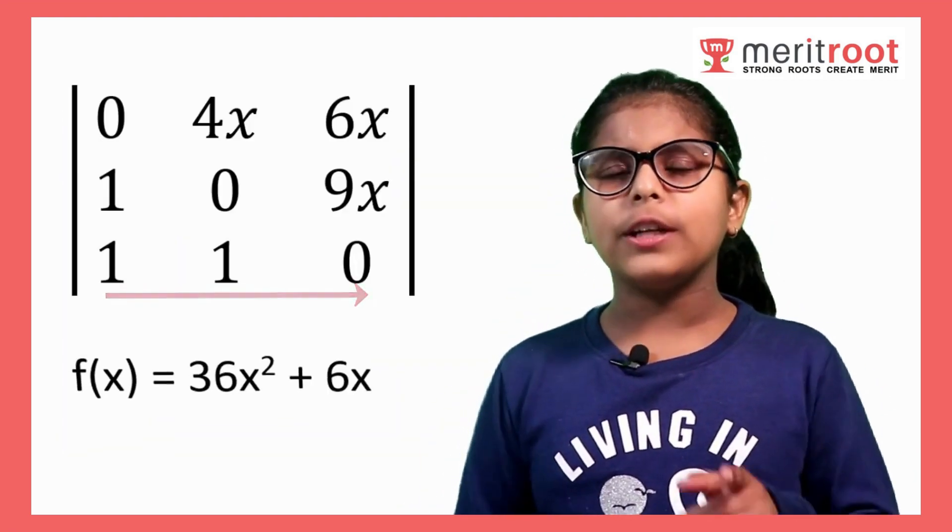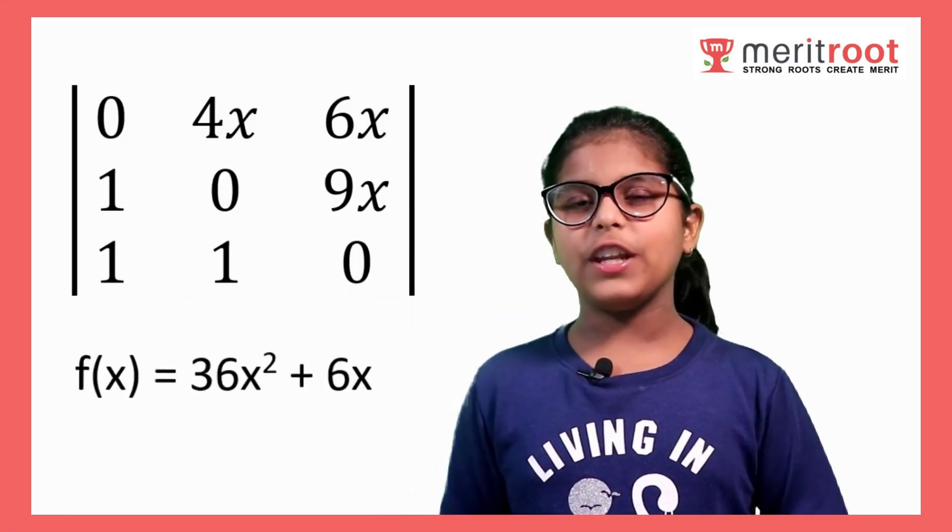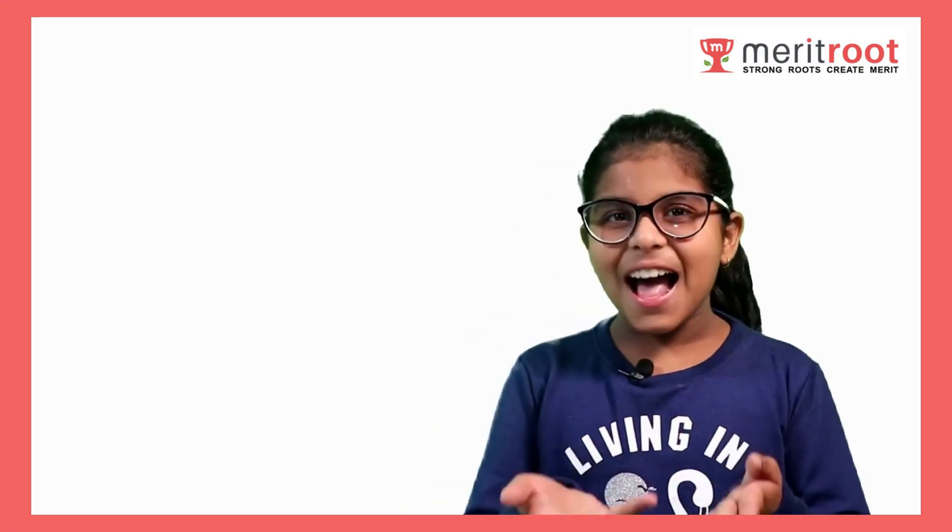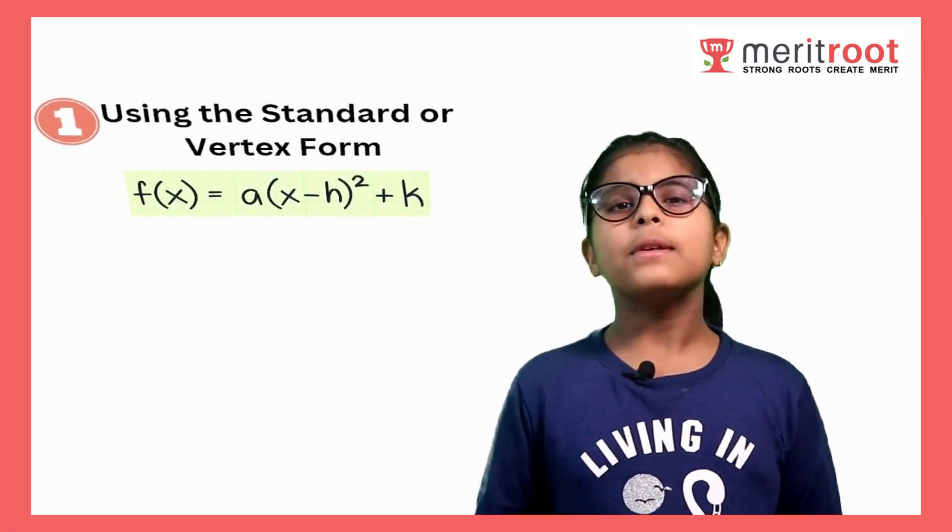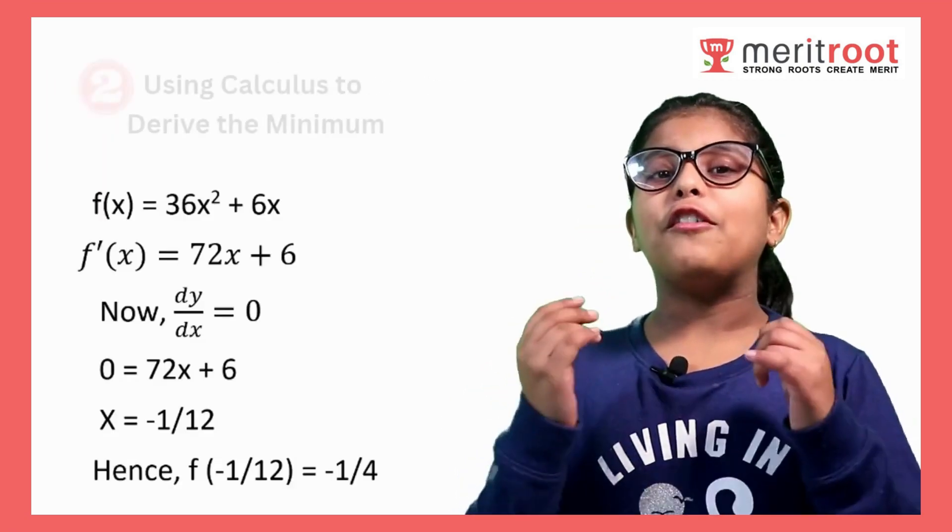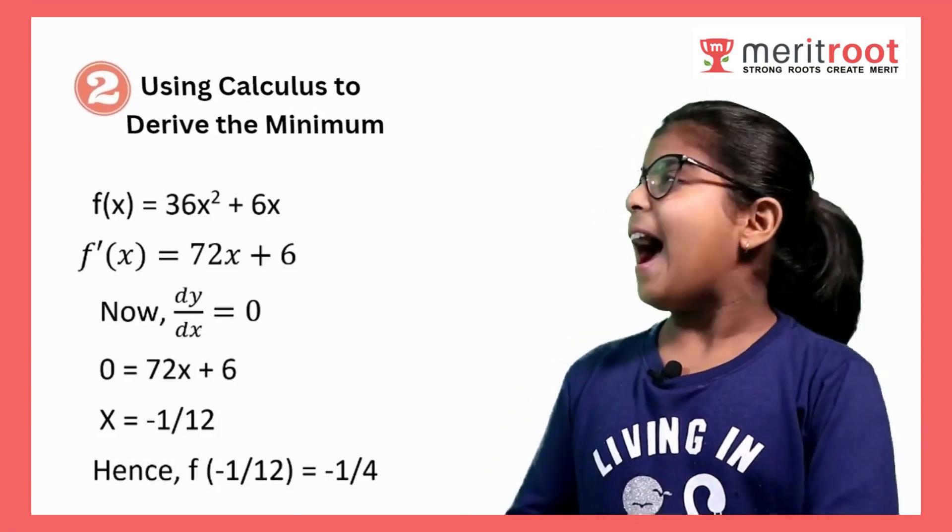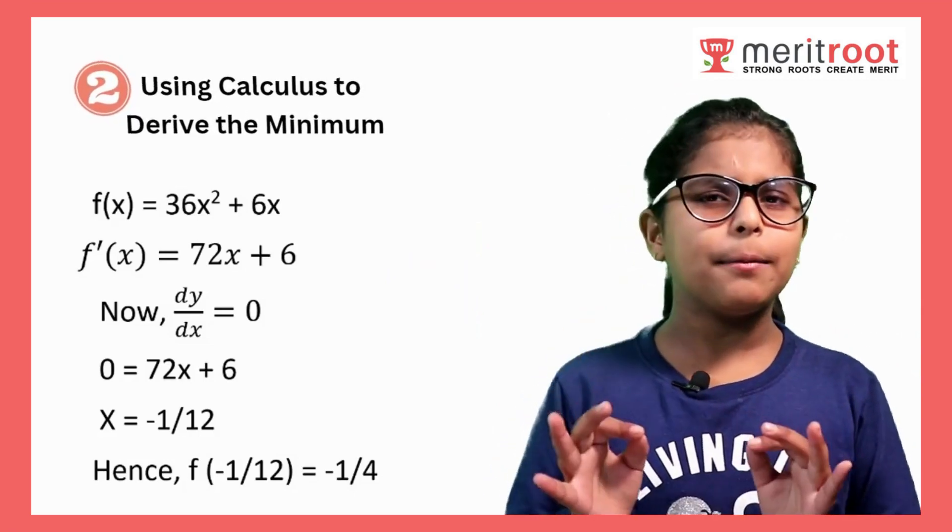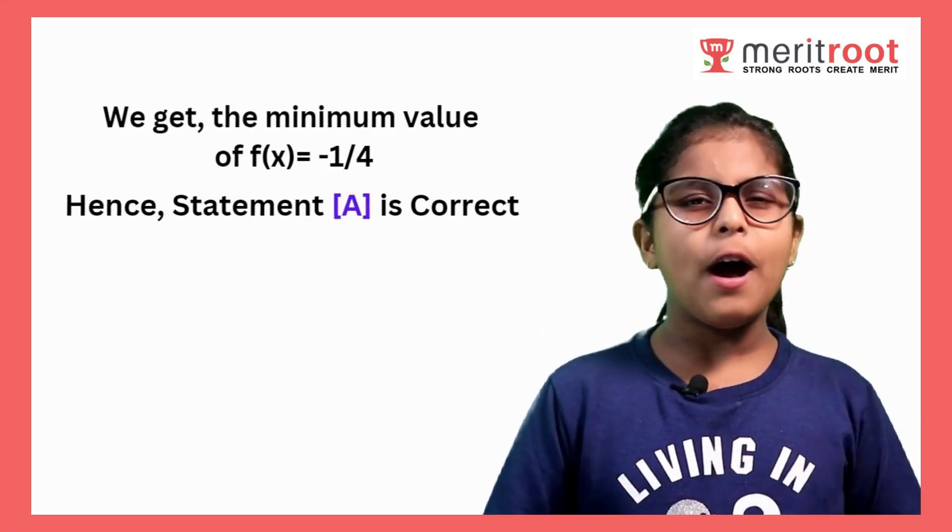As per statement A, we need to find the minimum value of quadratic equation. As we know that we have various methods like, first, using standard or vertex form, second, using calculus to derive the minimum. For finding the minimum value, we will use calculus method as mentioned. And finally, we get the minimum value of f(x) is equal to minus 1 by 4. Hence, the statement A is totally correct.